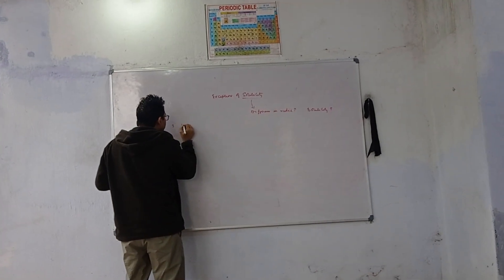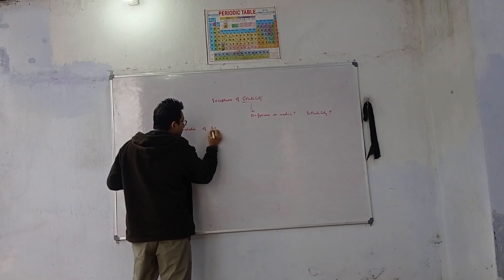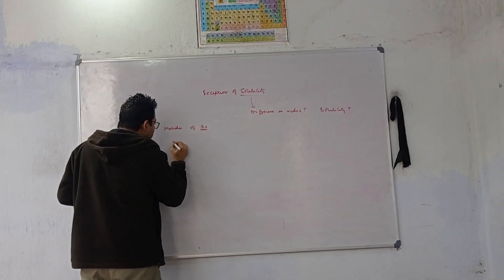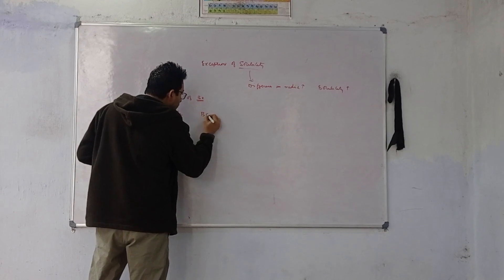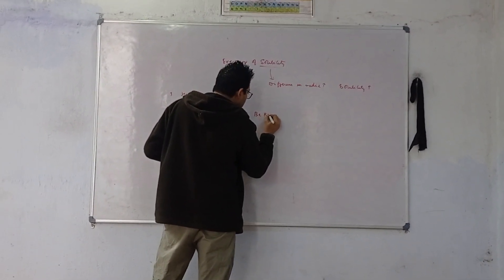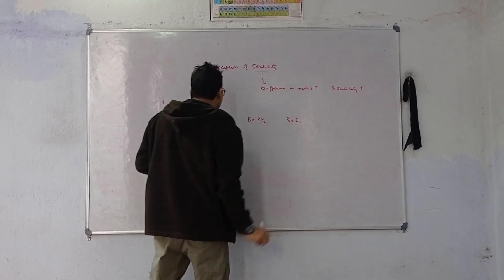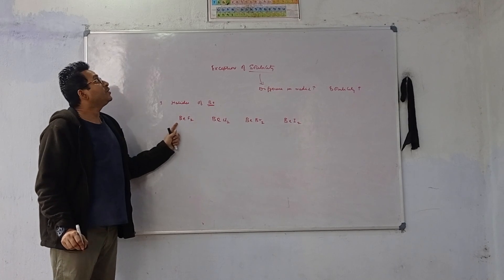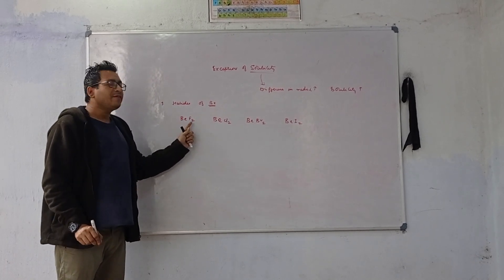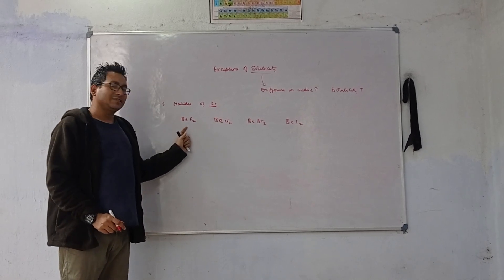The first exception is the halides of beryllium. We have examples here: BeF₂, BeCl₂, BeBr₂, and BeI₂. Since beryllium belongs to the second period element and fluorine also belongs to the second period element, they have good overlapping and the difference in radii is less, so the solubility of the compound will be less.